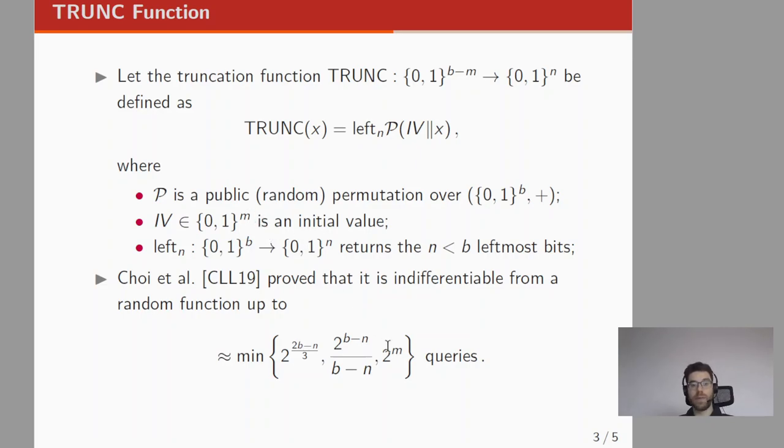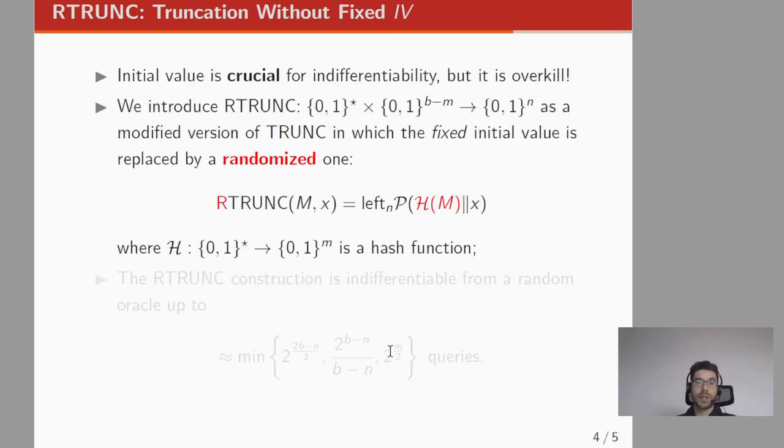For example, if m equals 0, then this number is equal to 1 which means you can easily differentiate this function from a random function. So the initial value is crucial for the indifferentiability, but at the same time it is overkill because there are scenarios where we can prove that this construction is secure even without this fixed initial value.